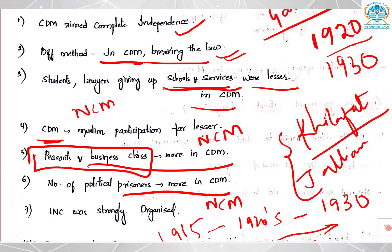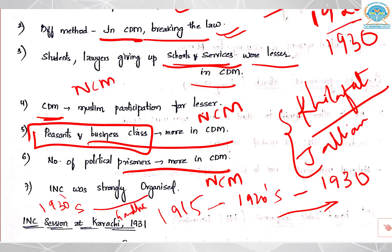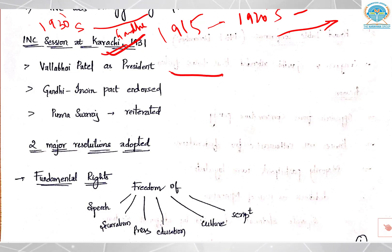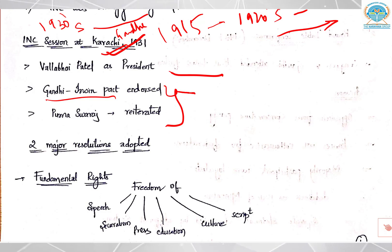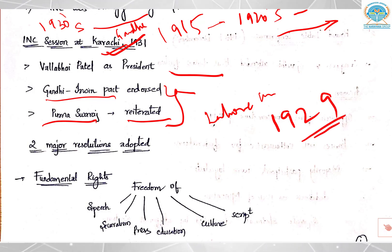The number of political prisoners became more, and by the 1930s the Indian National Congress was organized much more strongly, also with the help of Gandhi's leadership. The Indian National Congress session in 1931 happened at Karachi, which is in Pakistan now. In that session, Vallabhbhai Patel acted as president. The Gandhi-Irwin Pact was endorsed, also known as the Delhi Pact, and the goal of Purna Swaraj was reiterated — which was originally adopted in the Lahore session of 1929 with Jawaharlal Nehru as president.